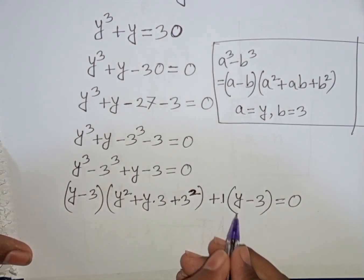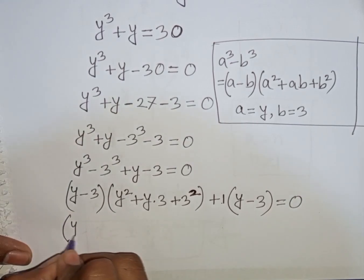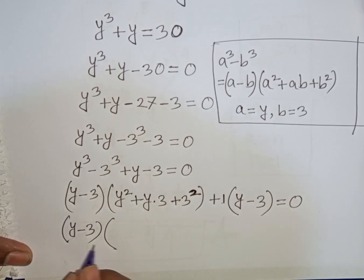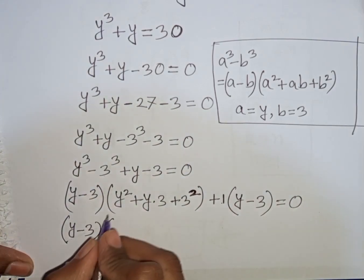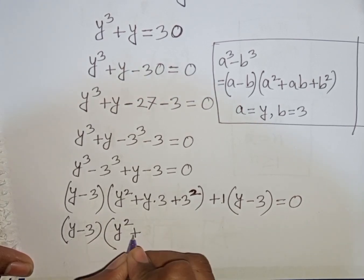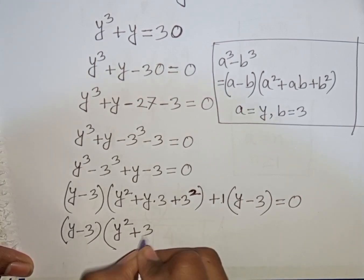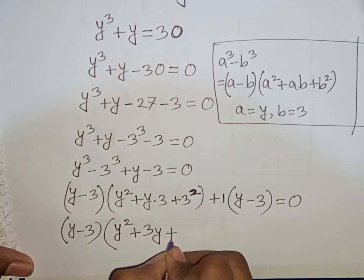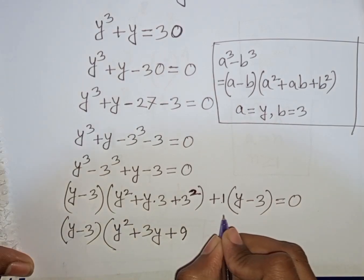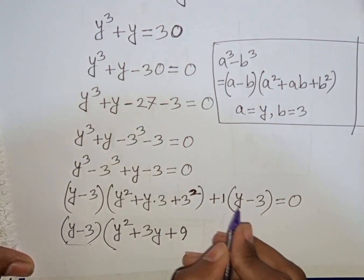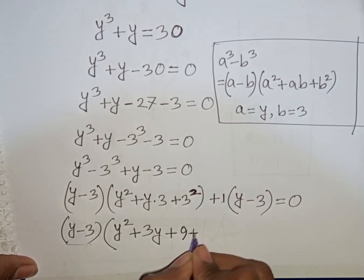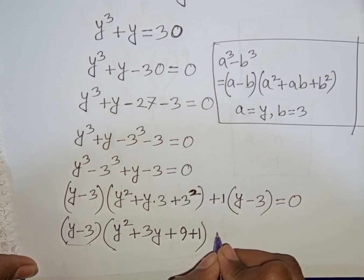Now we see y minus 3 is common in both terms, so take out y minus 3. This divided by this means y minus 3 will be cancelled, so we have y squared plus 3y plus 9 then plus 1, bracket close, is equal to 0.